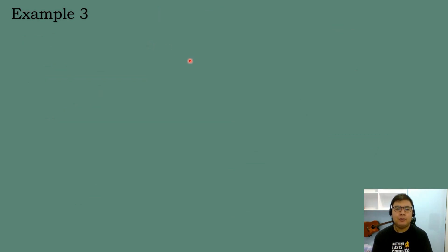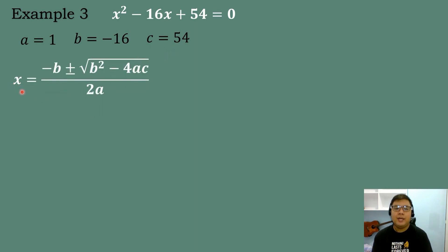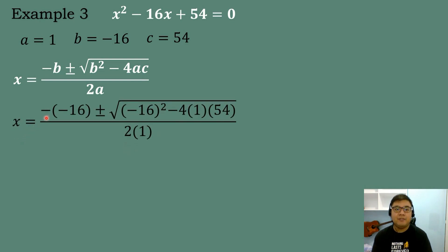Let's solve our last example. Solve the roots of the quadratic equation X squared minus 16X plus 54 equals 0. Let's identify the numerical coefficients: A equals 1, B equals negative 16, and C equals 54. We will use the quadratic formula: X equals negative B plus or minus the square root of B squared minus 4AC, all over 2A. Substituting: X equals negative times negative 16, plus or minus the square root of negative 16 raised to the second power, minus 4 times 1 times 54, all over 2 times 1.